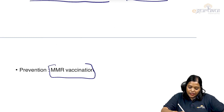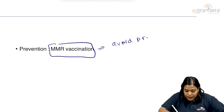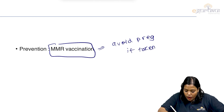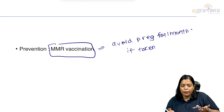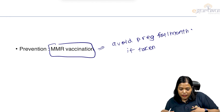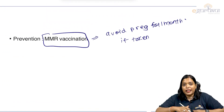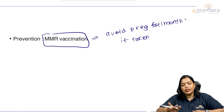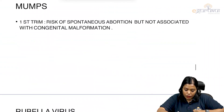Prevention of rubella is by MMR vaccination. Ask the patient to avoid pregnancy for 1 month after vaccination. If somebody unknowingly took the MMR vaccination during pregnancy, there is no need to terminate the pregnancy — you can continue the pregnancy. That covers rubella virus.